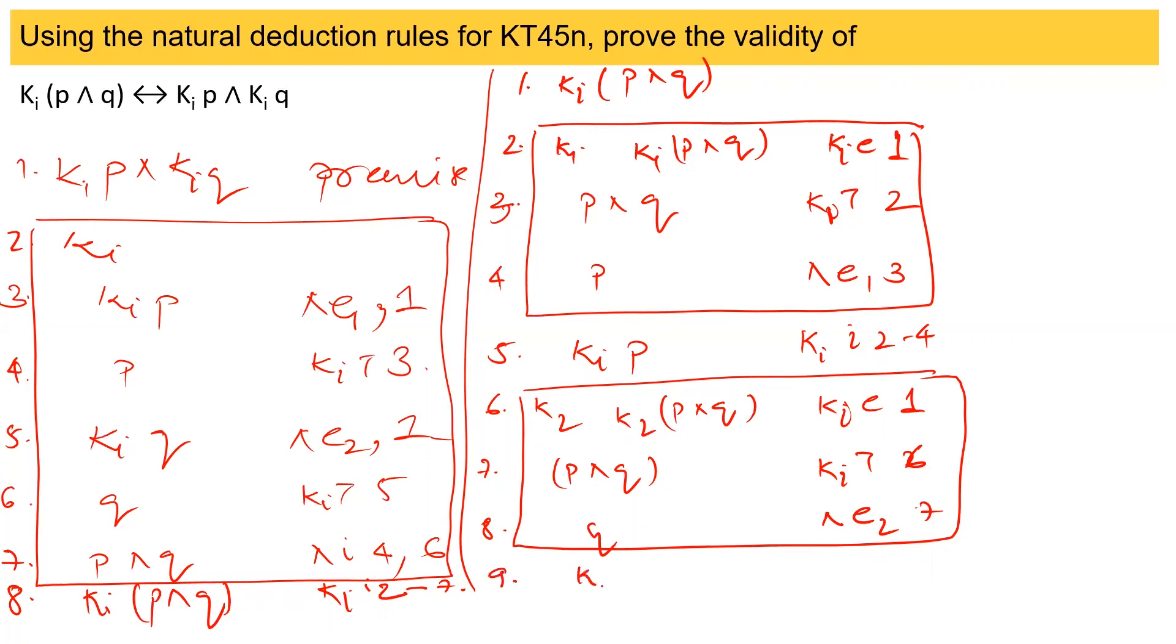This gives me KIQ. This is the KI introductory rule using 6-8. So finally, I have from 5 and 9, I can say KIP and KIQ. This is the AND introduction using 5, 9.